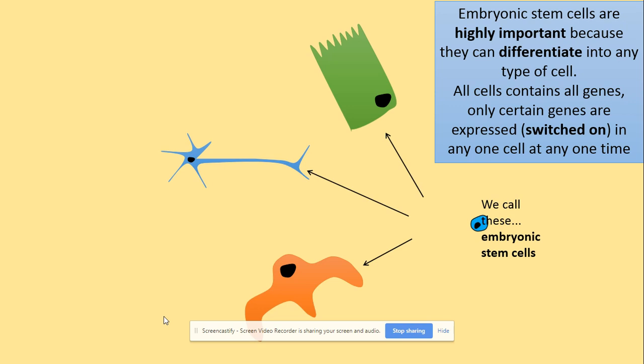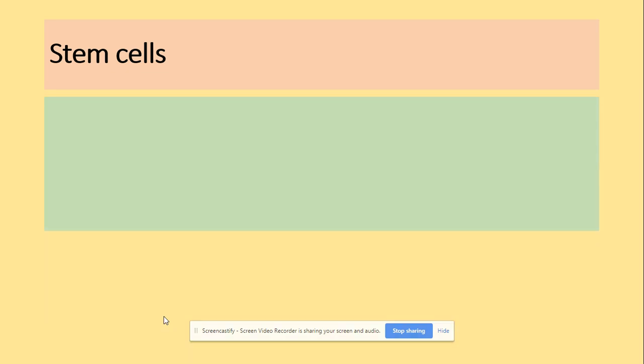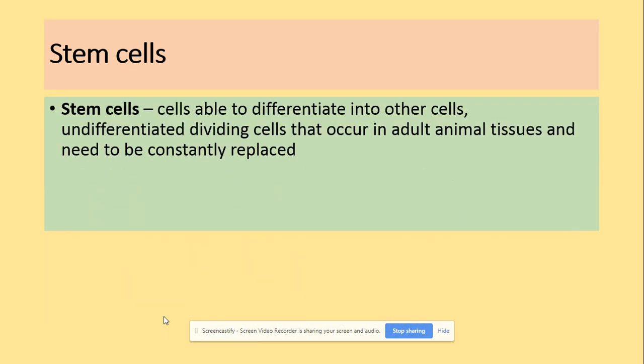Embryonic stem cells are highly important because they can differentiate into any type of cell. All cells contain genes, but only certain genes will be switched on at any given time, so they can code for the specific type of cell. Stem cells are undifferentiated dividing cells that occur in adult animal tissues and need to be constantly replaced. Specialization is something that we cannot turn back.